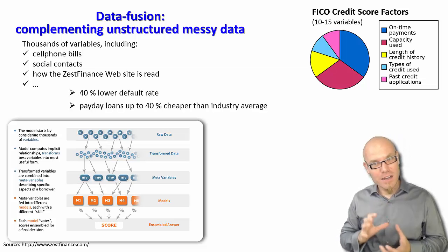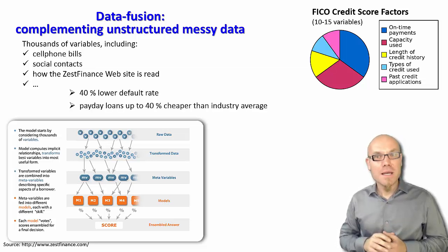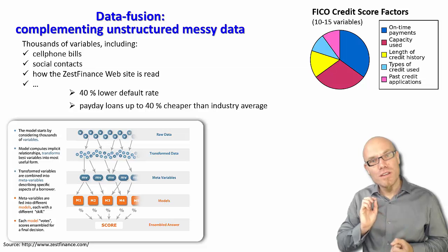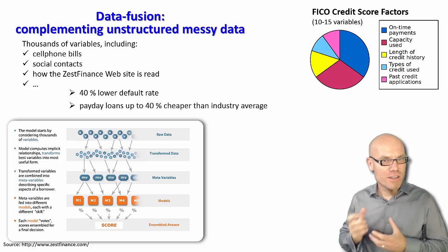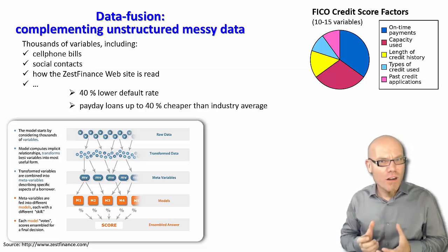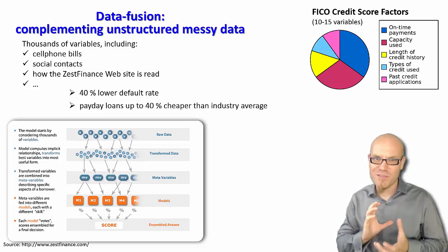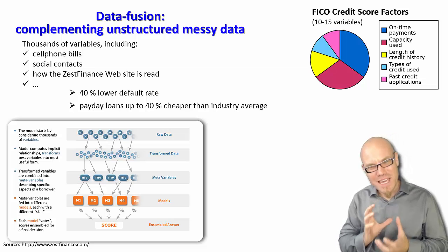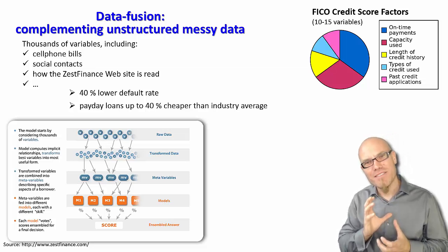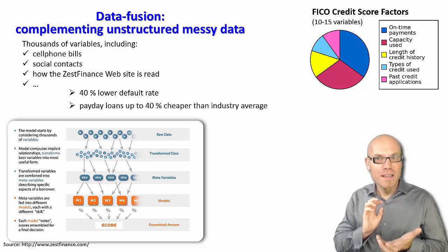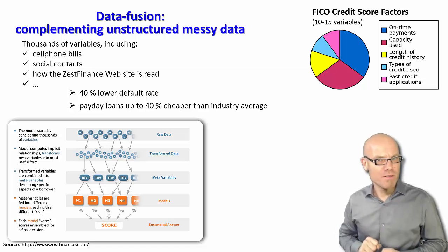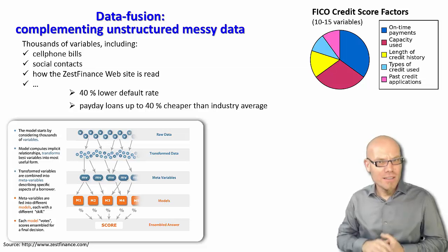With a result: after analyzing these thousands of variables, they were able to predict default with a 40% better prediction than traditional credit score rating. That means if you can predict 40% of the defaults — the non-payback events — better, you can also offer loans 40% cheaper than traditional credit rating.